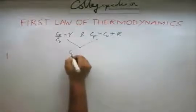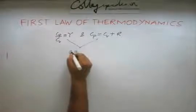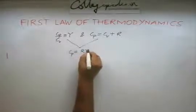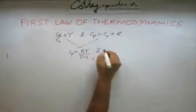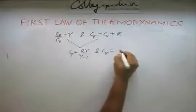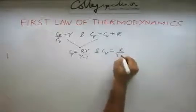So by this, if you do a simple maths, you will just get Cp to be equal to R gamma by gamma minus 1 and Cv to be equal to R by gamma minus 1.